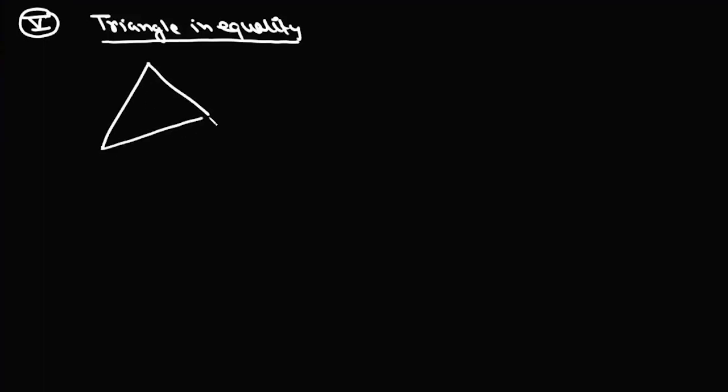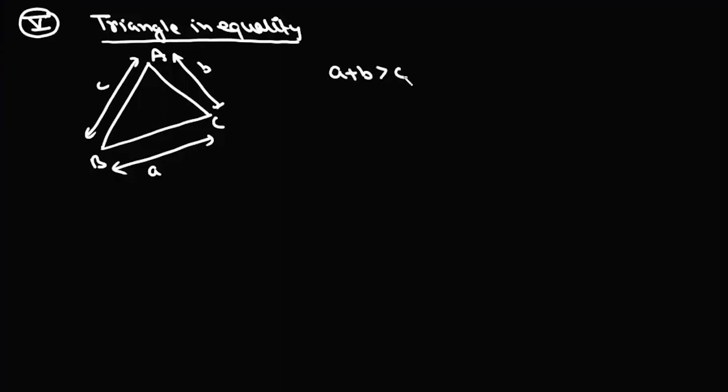The fifth inequality we want to study is the triangle inequality. Though this is a very simple inequality, it has very wide applications in multiple fields and gives access to very interesting inequalities. If there's a triangle ABC whose side lengths are a, b, and c, then the triangle inequality dictates that the sum of two sides is always greater than the third side: a+b > c, b+c > a, and c+a > b.